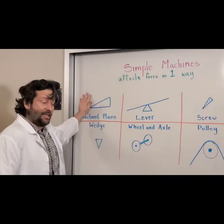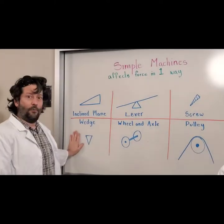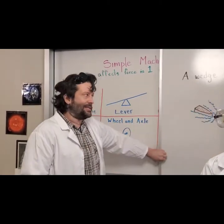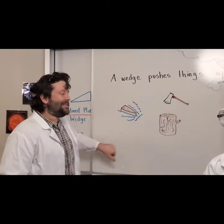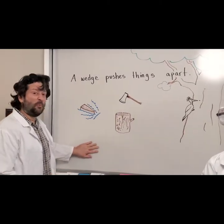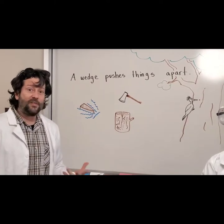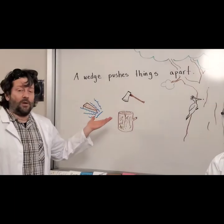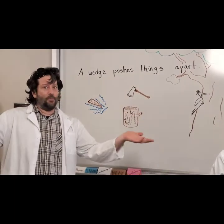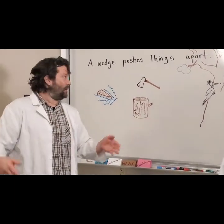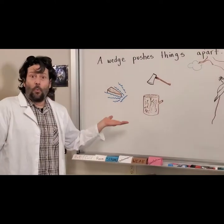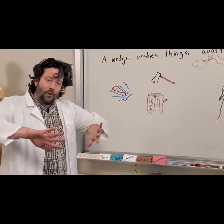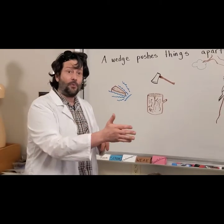We did inclined plane last time. Today we're going to do the forceful wedge. Where do you see wedges? You actually see them all the time. It's a simple machine so we use it all the time in our daily lives. What a wedge does is it just pushes things apart. Things like boats going through the water — they have a point at the front, so as they're going through the water, they separate the water and push it out of their way so that they can move through it.